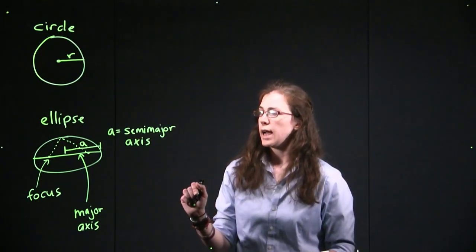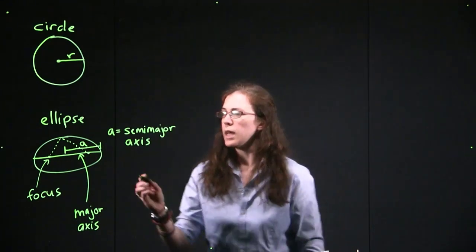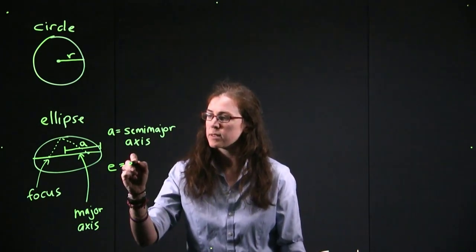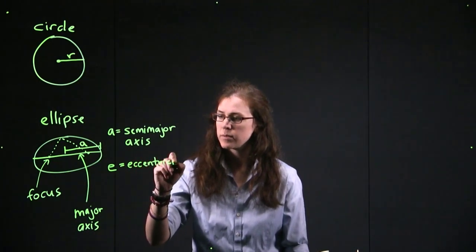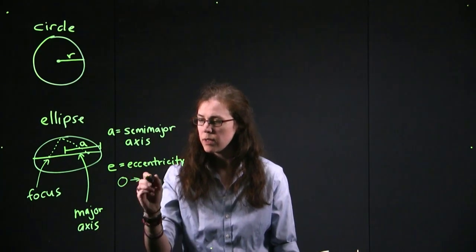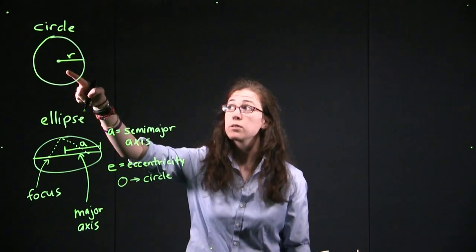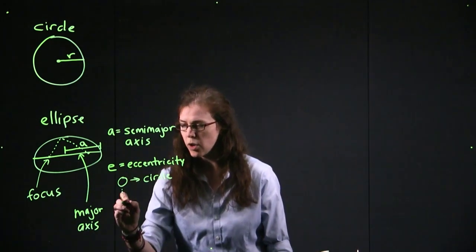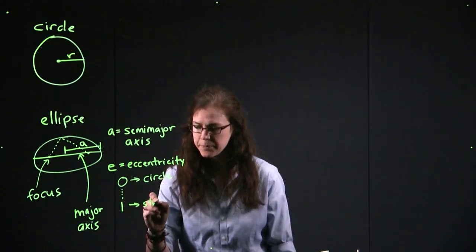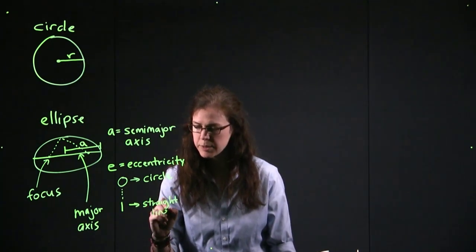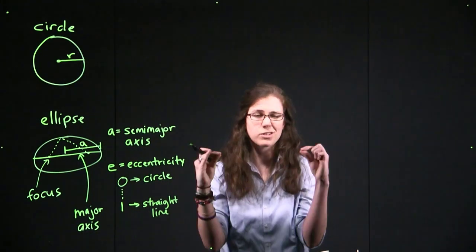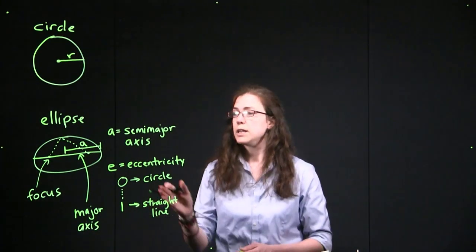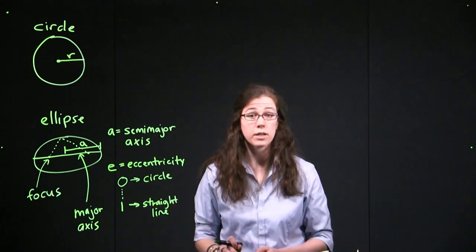We also can tell how squashed an ellipse is with a certain number. The little e that we saw in our slides, we'll make sure that we remember, that's eccentricity, where if we had a zero, that would be a circle. This shape that I've made has an eccentricity of zero. And it can go all the way up 0.1, 0.2, 0.3, all the way up to 1, which would pretty much be a straight line, where we've squashed the ellipse out so much that it's no longer an elliptical shape. The one that I've drawn here on the board is actually already about 0.8 or 0.9 in this range between 0 and 1. We'll keep all of that in mind as we move forward.